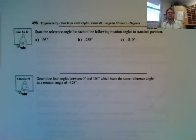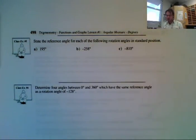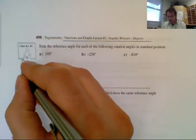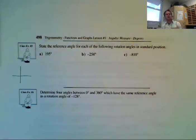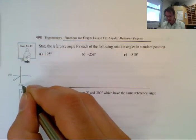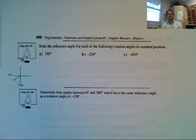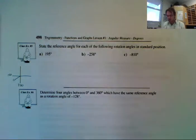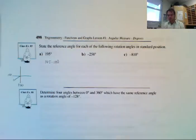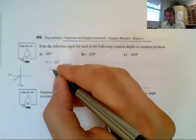So now we're going to look at question number 5 — we're going to put this into more practice. It says, state the reference angle for each of the following rotation angles in standard position. So 195 — I'm going to first draw out 195 and figure out what quadrant it is in. 195 is between 180 and 270. So in order to find my reference angle, I'm going to go 195 minus 180, which gives me a reference angle of 15 degrees.